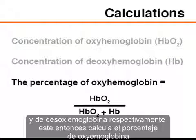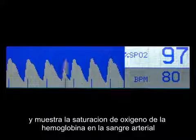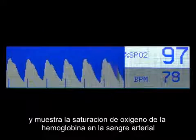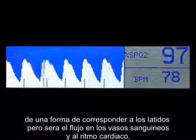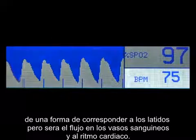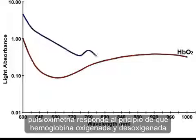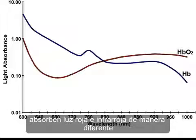It then calculates the percentage of oxyhemoglobin and displays the hemoglobin oxygen saturation in arterial blood, a waveform corresponding to the pulsatile flow in arterial vessels, and the heart rate. Pulse oximeters function on the principle that oxygenated and deoxygenated hemoglobin absorb red and infrared light differently.